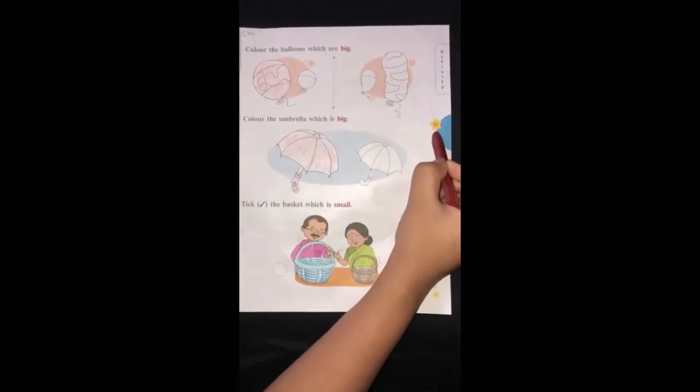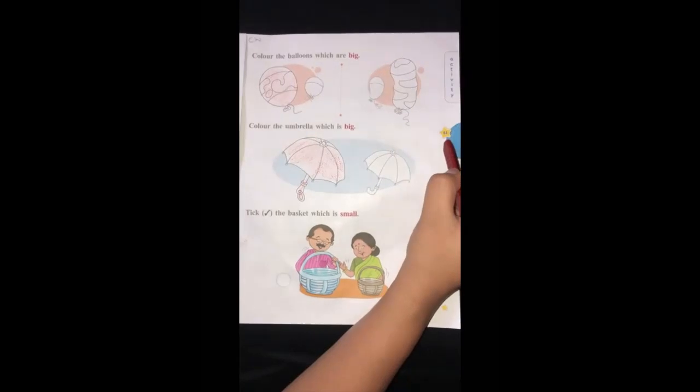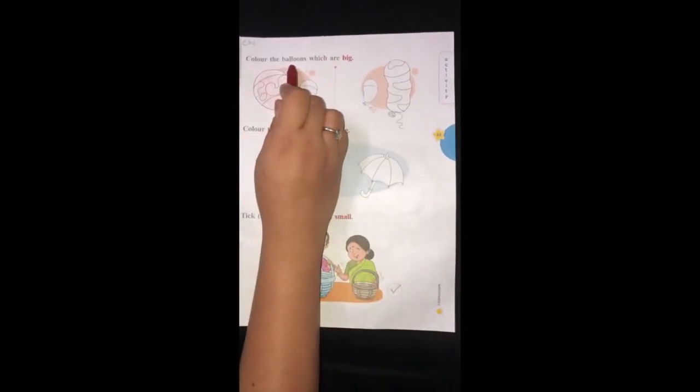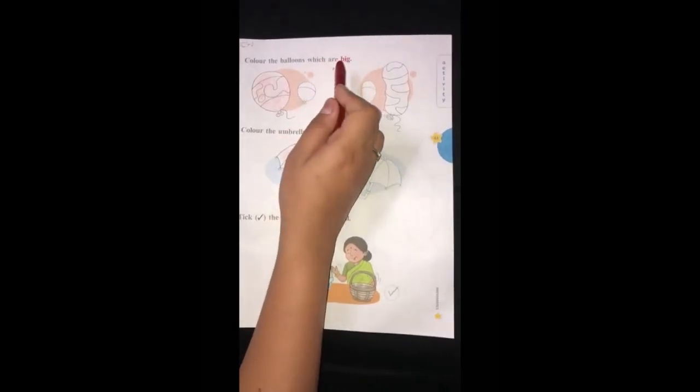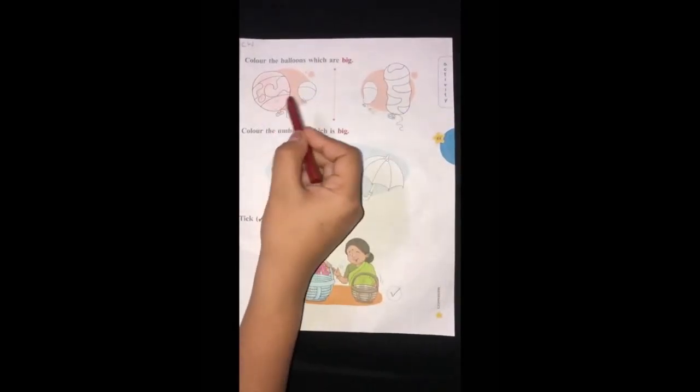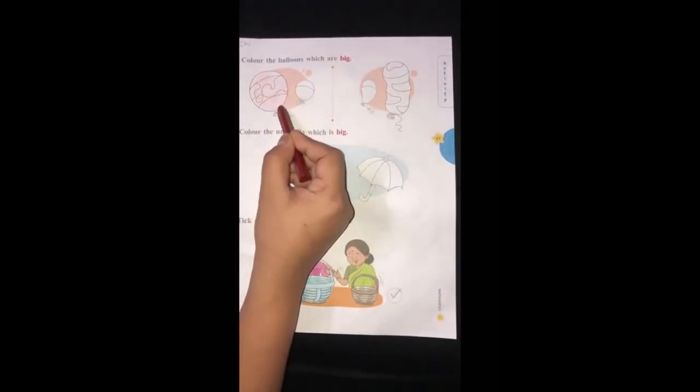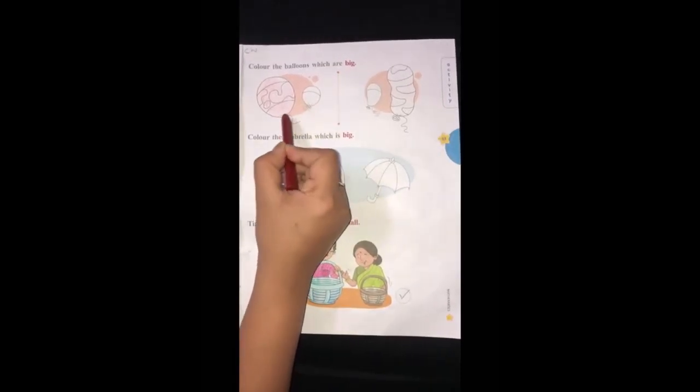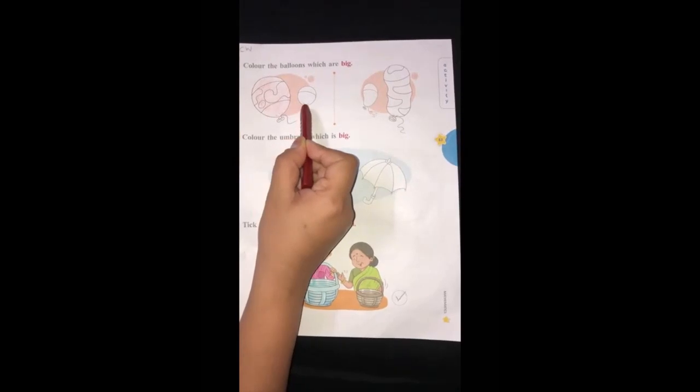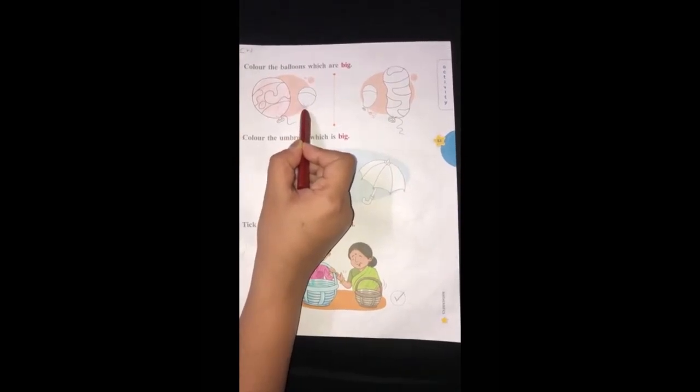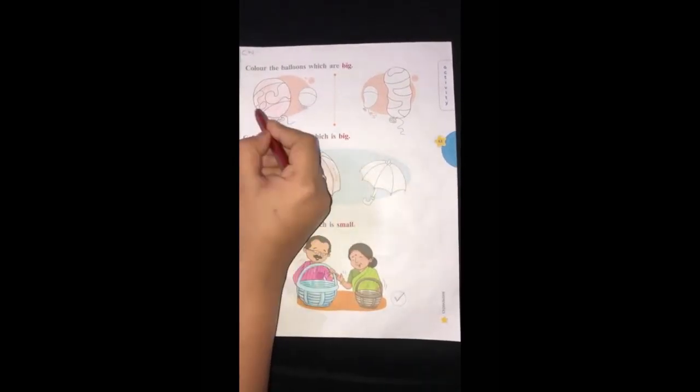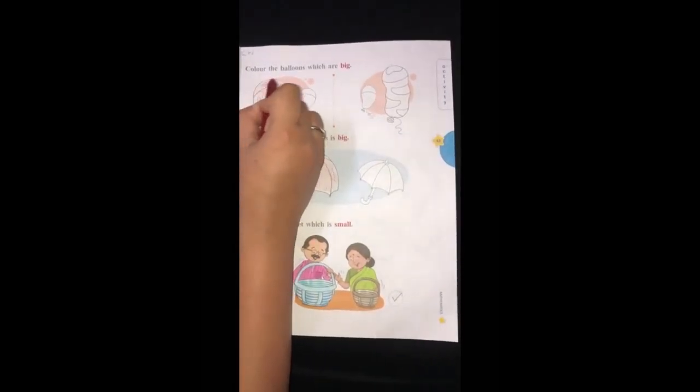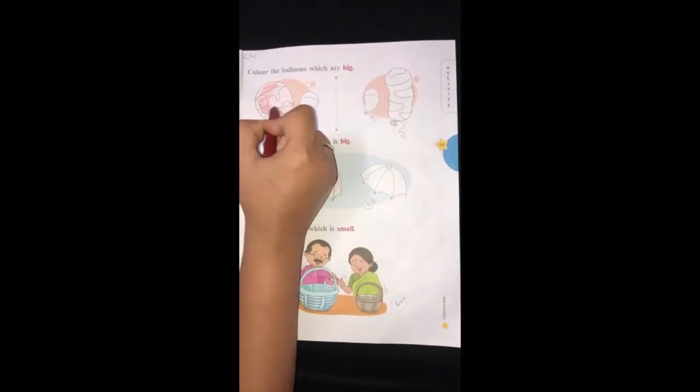I know my children like to do coloring. Let's start with an activity. Color the balloons which are big. Now, in this you can see there are two balloons. You have to color the big balloon. So find it. Where is the big balloon? Is this a big balloon? No. This balloon is big in size. So you have to color the big balloon.